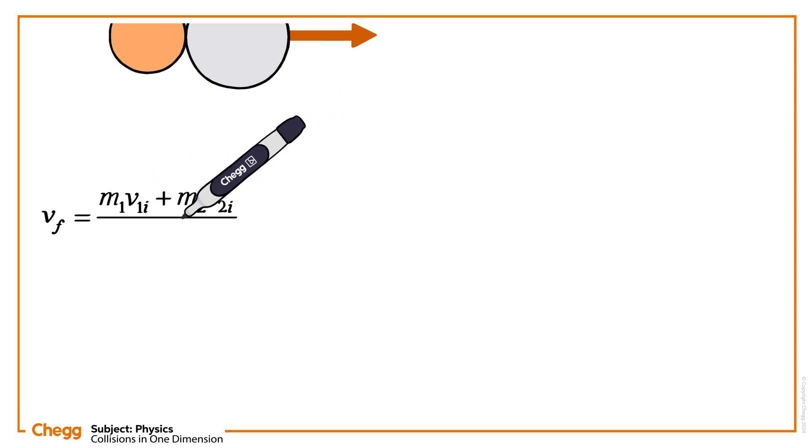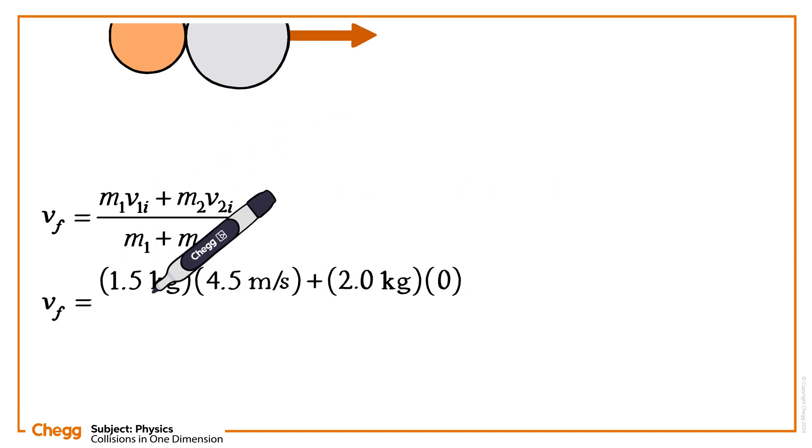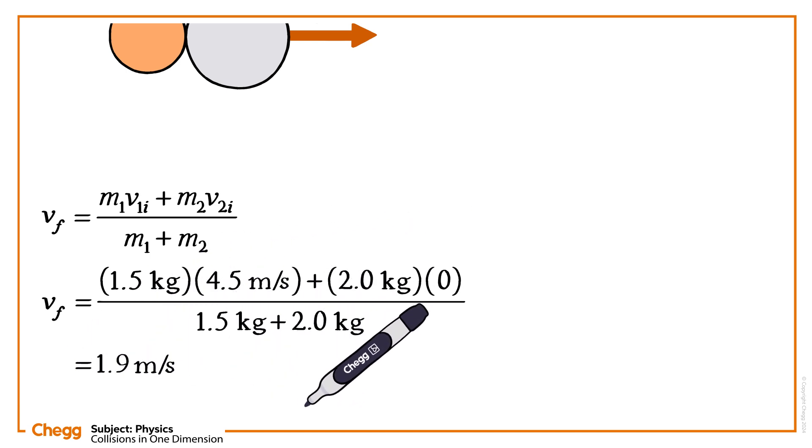Take the equation for Vf we just learned. Input the values for mass and initial velocity. The final velocity is equal to 1.9 meters per second.